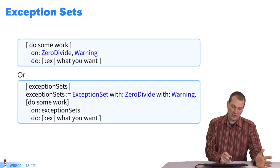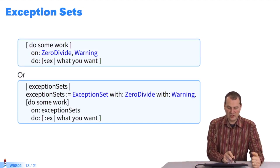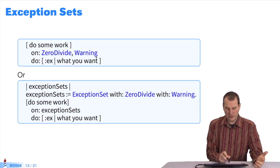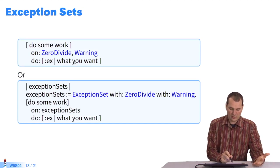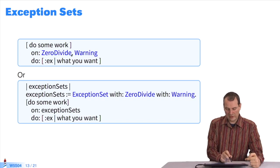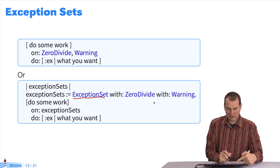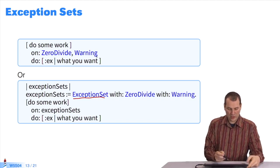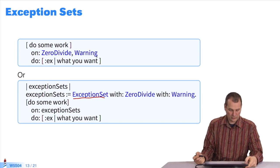You can have exception sets. You can say, if I have a zero divide and a warning, you can combine exceptions with a comma, which creates an exception set, allowing you to say 'I want to react to all these exceptions'. It's very rarely used — it's just for completeness.